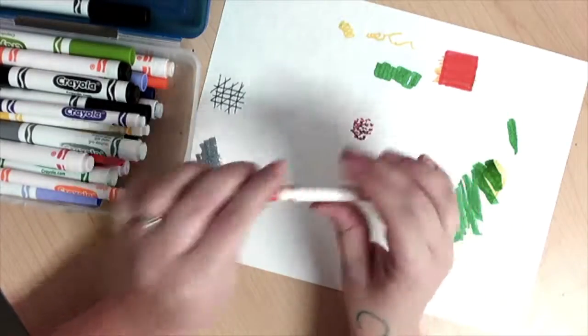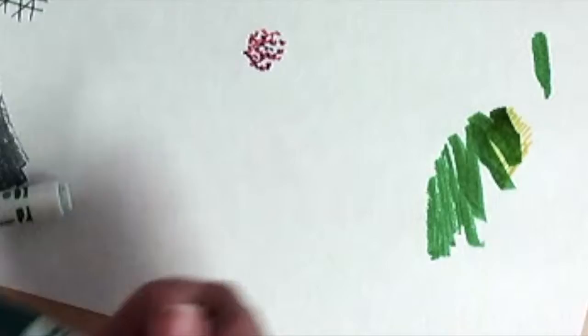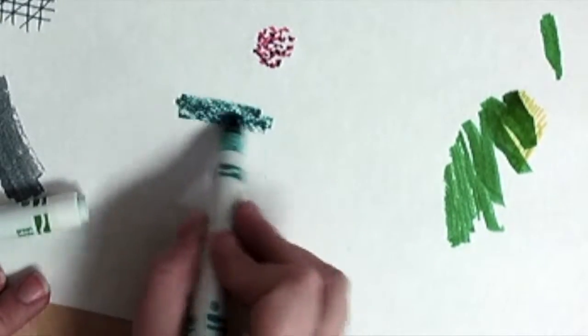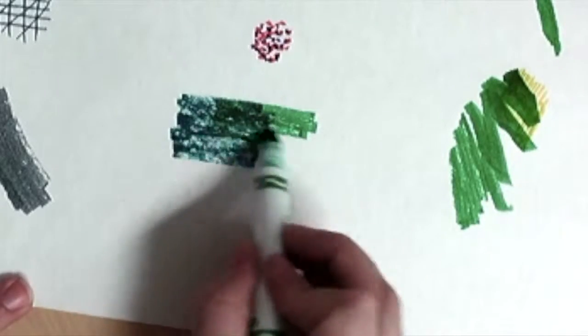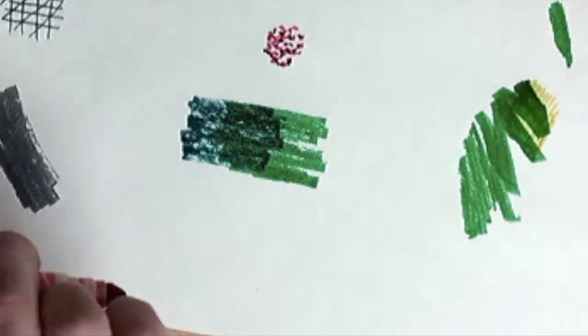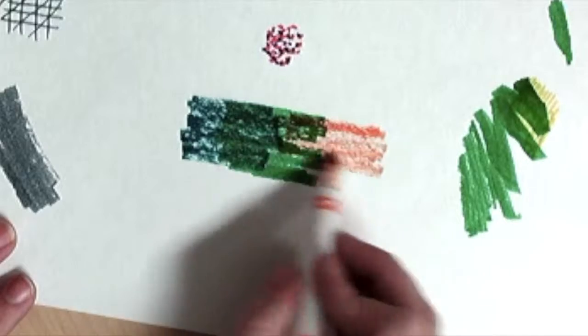Blending colors is simple. First, use the edge of your marker to lay down one color, and then on top of it lay down another color, and look, now you've mixed colors. You can do this with lots of colors to create your own unique and exciting color.